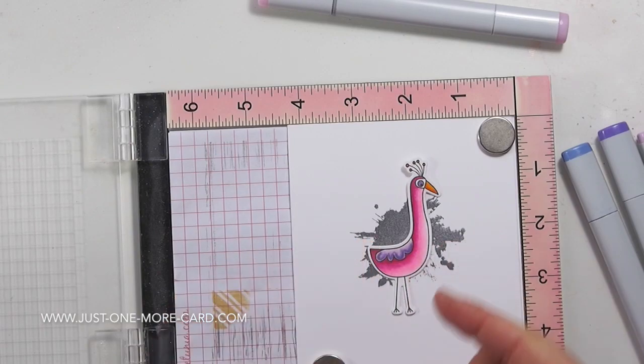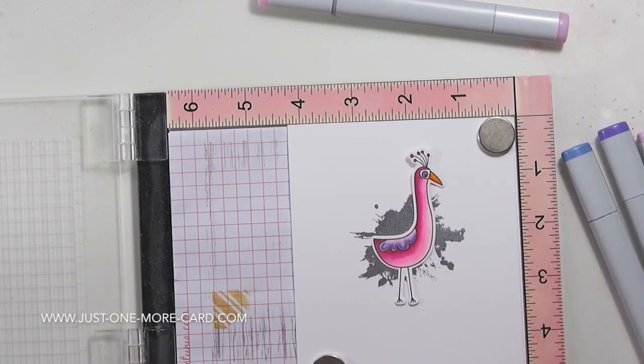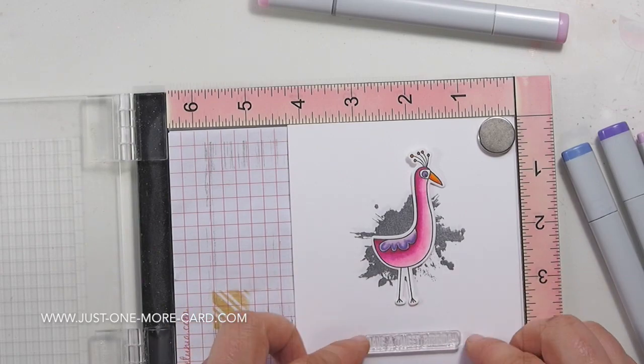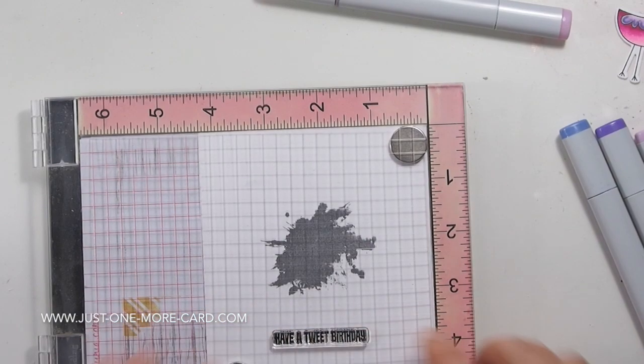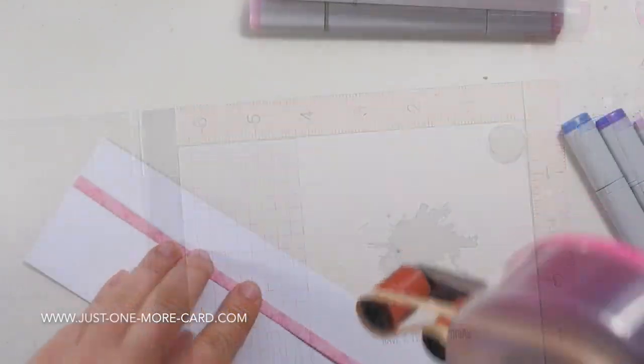This is how the bird will go on top of this, and I just need to place it here so I know how far its legs will extend, because I need to place the sentiment in the correct position. Of course I'm using Versafine ink for the sentiment. There we go, 'Have a Tweet Birthday.'